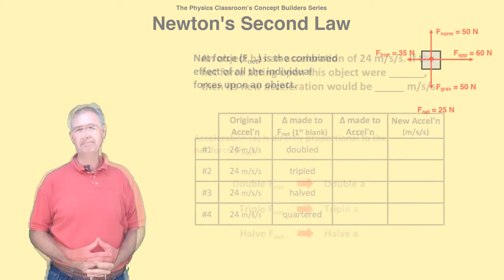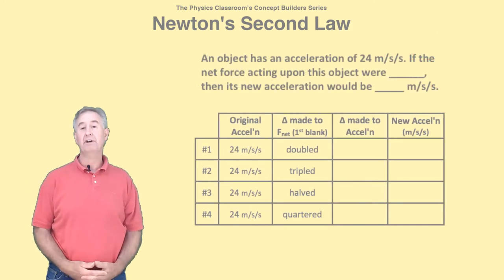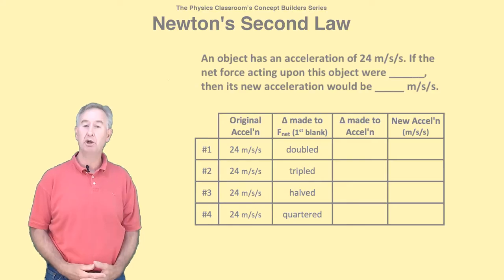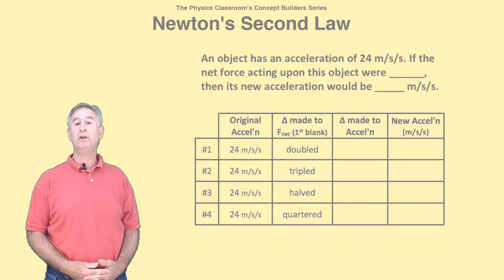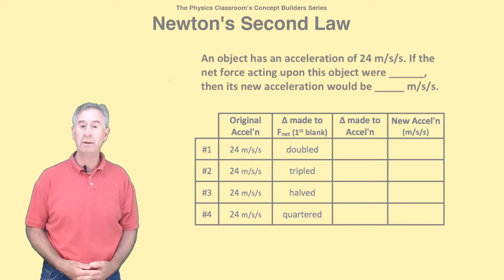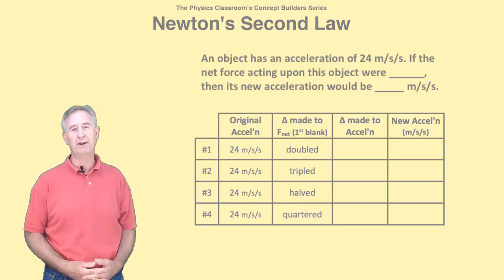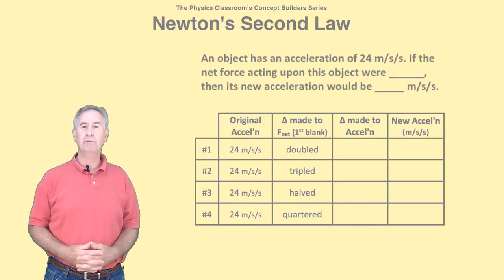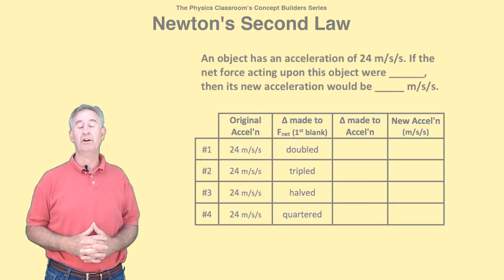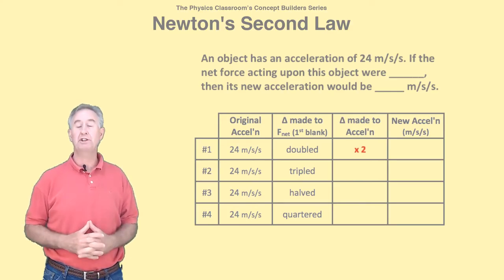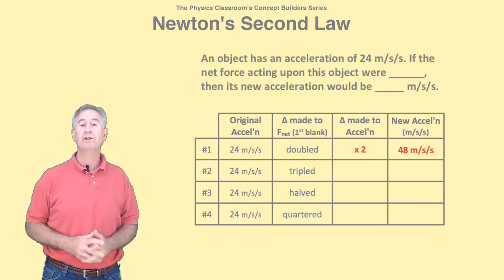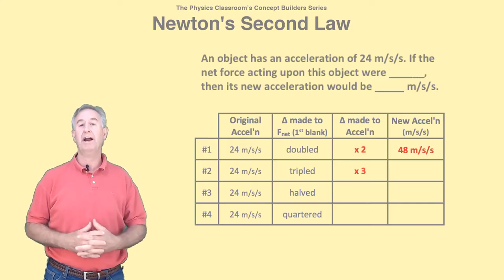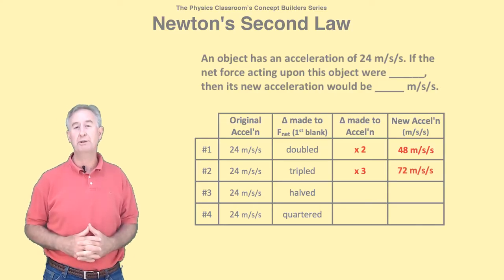Let's try a practice problem. We're given an acceleration of 24 meters per second per second and told that there's a change in the net force value. We have to determine the new acceleration. We'll use a table as an organizer. The strategy involves determining the multiplying or dividing factor required to change the 24 meters per second per second into a new acceleration value. In row number one, the net force is doubled, so the acceleration must change by the same factor. The multiplying factor is 2. The new acceleration is 24 times 2, that's 48 meters per second per second. In row number two, the net force is tripled, so the acceleration must be tripled. The multiplying factor is 3. The new acceleration is 72 meters per second per second.